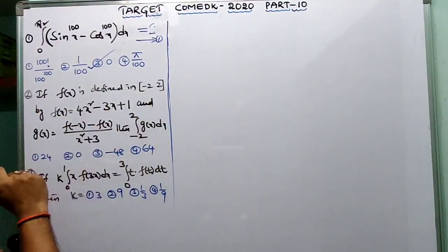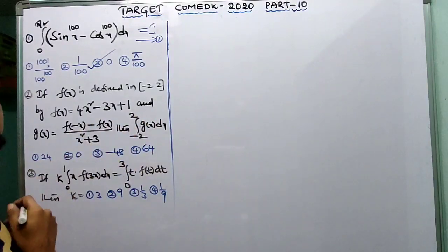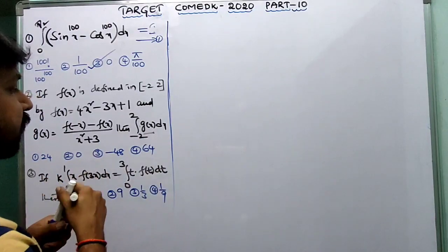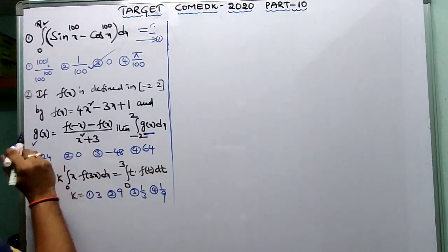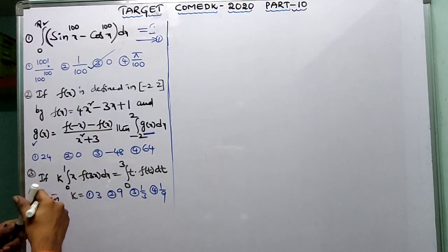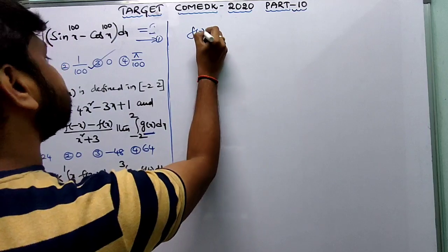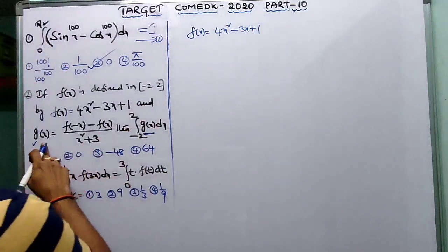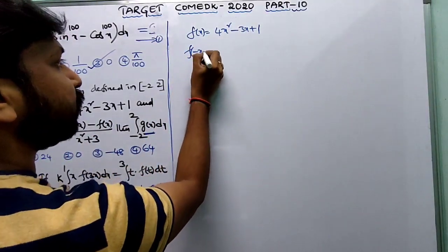Next question: f(x) is defined on the closed interval [-2, 2] and g(x) is also given; they're asking for integral from -2 to 2 of g(x) dx. First, find g(x) — it is given in terms of f(x). f(x) is given as 4x² minus 3x plus 1. To find g(x) we need f(minus x).